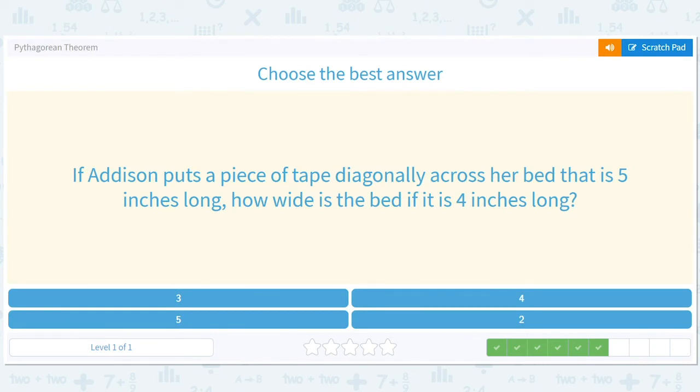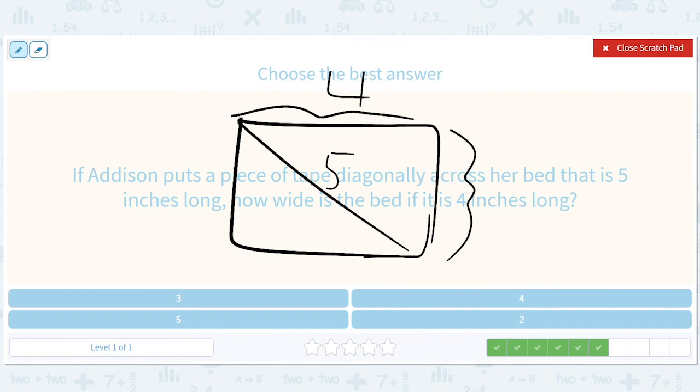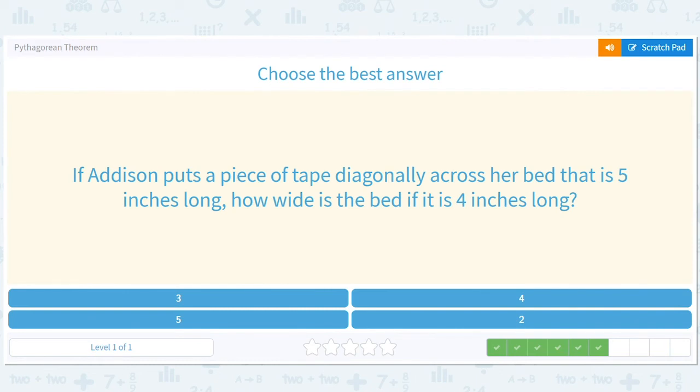If Addison puts a piece of tape diagonally across her bed that is 5 inches long, how wide is the bed if it is 4 inches long? So we've got a bed. I guess Addison is a mouse because her bed is really small. This is 5, this is 4. So this is the width. It's a 3, 4, 5 triangle. I know you guys just probably immediately knew the answer, but that's not a good way to live life. You got to draw some pictures. Just because you know you can eat fast doesn't mean you should.